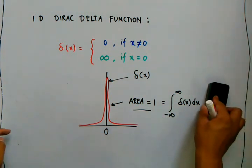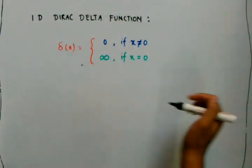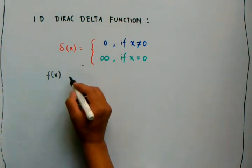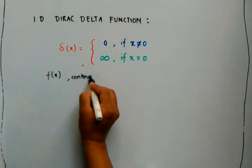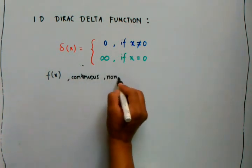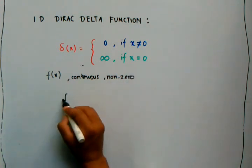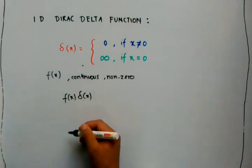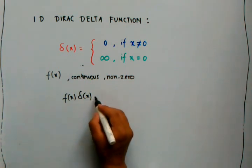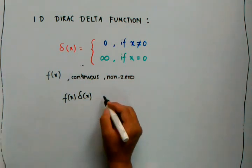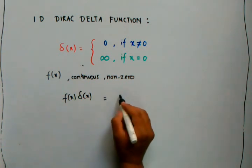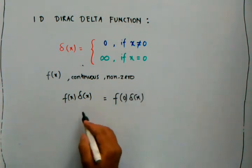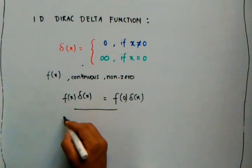Now suppose we have any ordinary function f(x) — to be on the safe side, let's say it is continuous and non-zero. When we multiply f(x) by the Dirac delta function δ(x), the value of this product at any point other than zero is zero. Therefore, this function will have its value only at x equals zero.